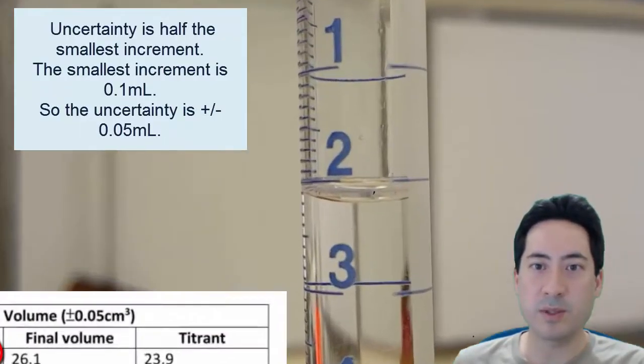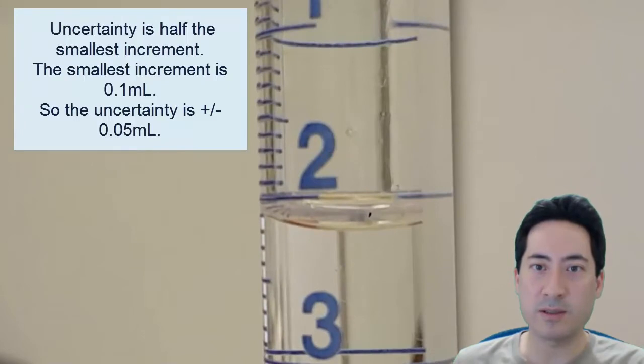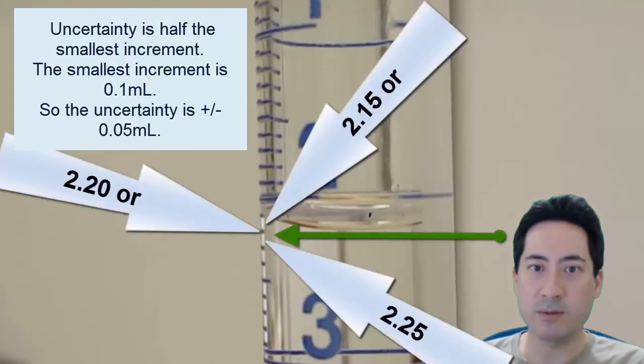And don't forget to read it down to half the smallest increment. So that's plus 2.20, not 2.2. It's 2.20 because it goes down in increments of 1. So the uncertainty is half of 1, 0.1 mil. So it's 0.05. So it's 2.20 plus and minus 0.05.